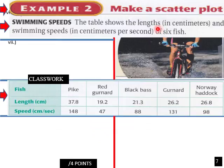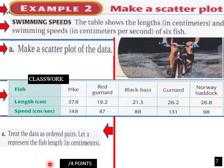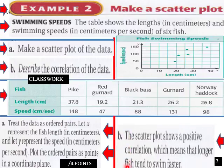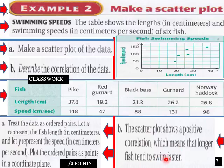Make a scatter plot. The table shows the lengths in centimeters and swimming speeds. So we have this table here. Make a scatter plot of the data. Treat the data as ordered pairs. Let x represent length in centimeters. Let y represent the speed in centimeters per second. Plot the ordered pairs as points in a coordinate plane. And that we've done here. We have done that here. Let's see 19.2 here. We got a 47 for that. And then a 21.3 we get an 88. So we have a general, looks like a positive correlation here between length of fish and speed. So as the lengths go up on fish, the higher speed they swim. Describe the correlation in data. Positive correlation means longer fish tend to swim faster.